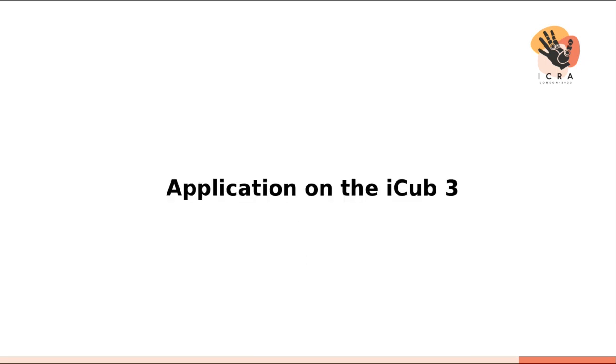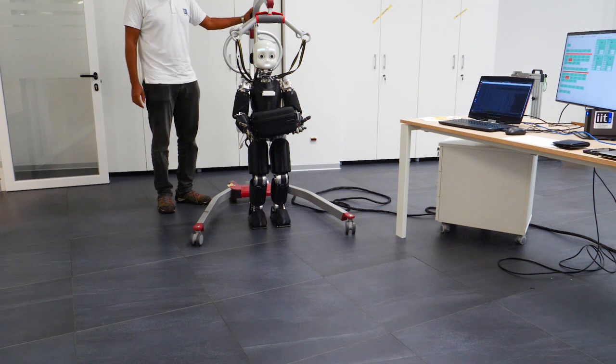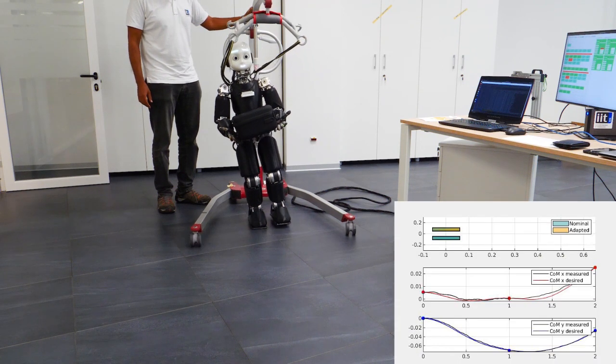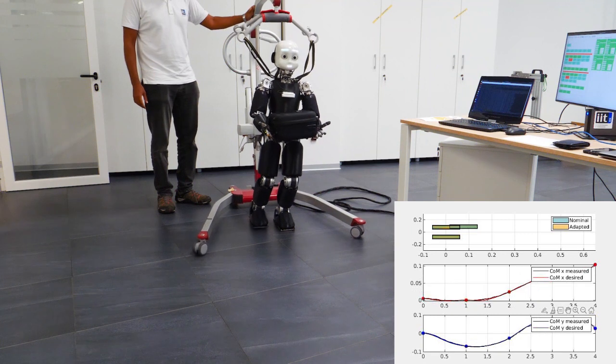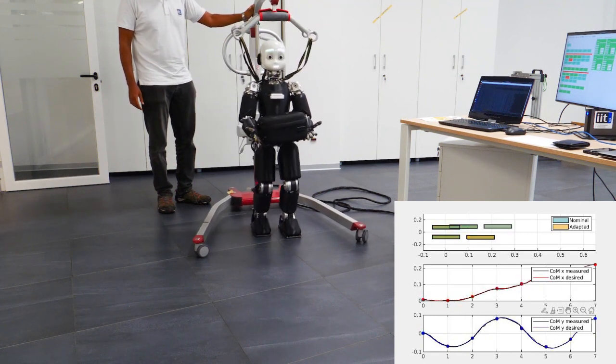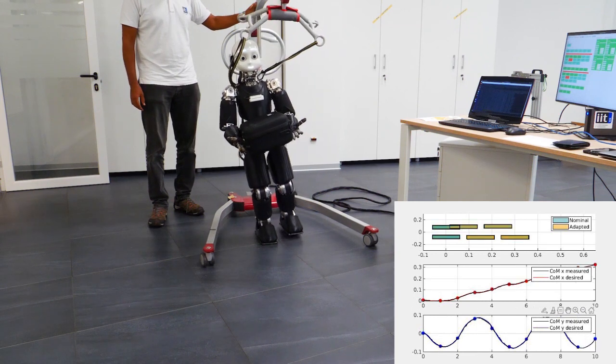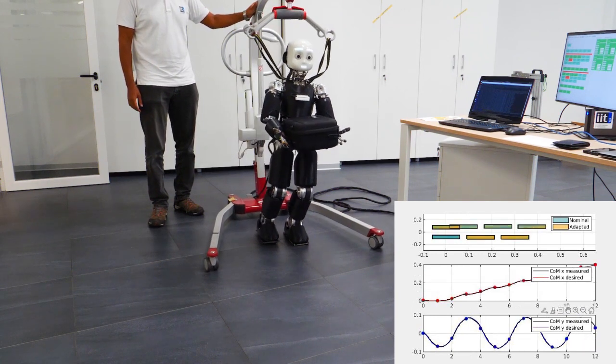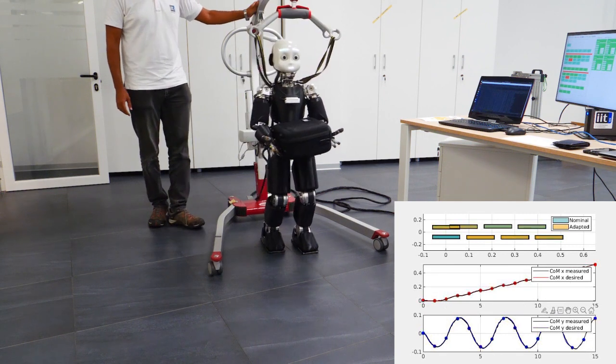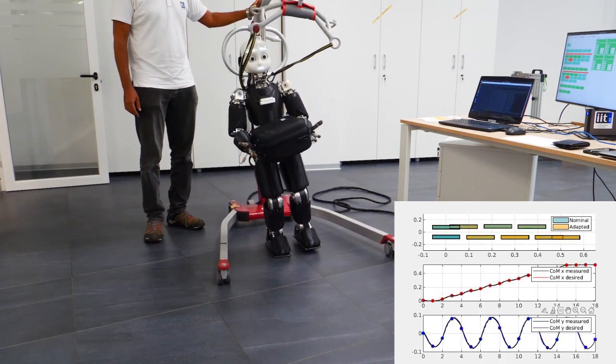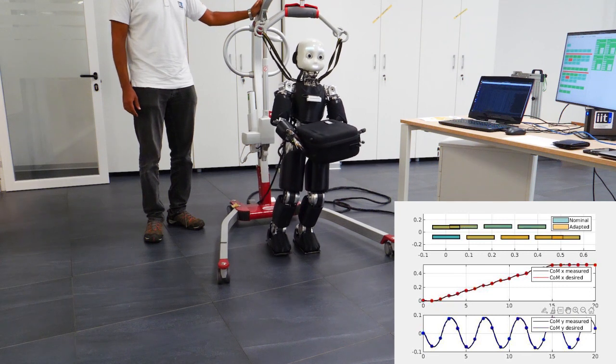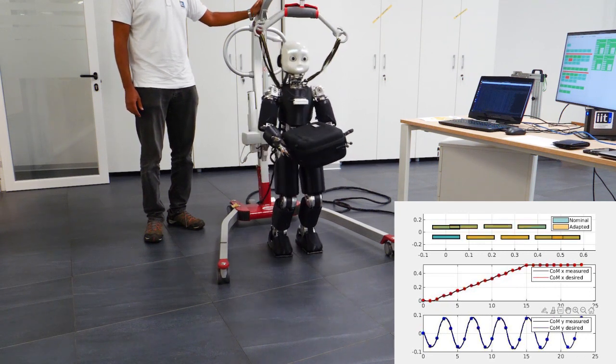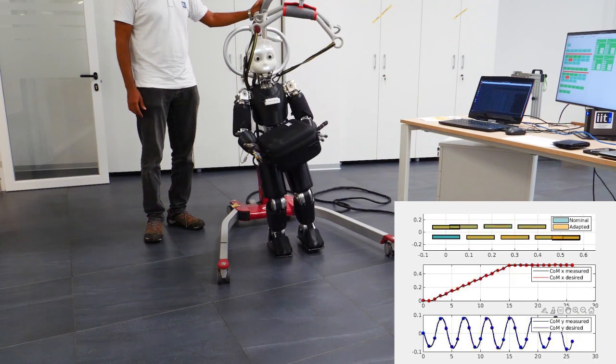Finally, we apply this to the humanoid robot platform iCub3. We allow this robot to carry a box which has in its interior a two kilogram weight to mimic the effect of a persistent disturbance. The robot is able to perform the nominal contact locations with slight adjustment due to the payload without falling over. The tracking performance is nice.